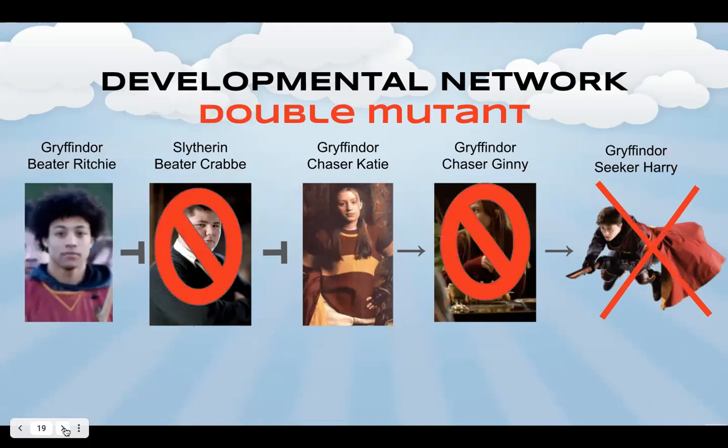What about a double mutant, such that Crab and Ginny are both not playing in that match? While it is true that the gene Crab will not be there to repress gene Katie's expression, this doesn't matter anyways, because if the gene Ginny is not there to begin with, gene Harry's expression will not be activated. So Gryffindor will lose the game anyways in this example too.